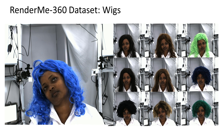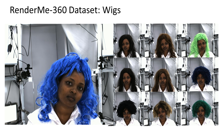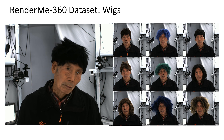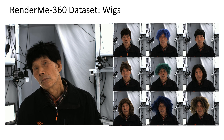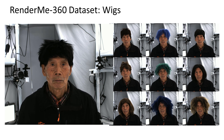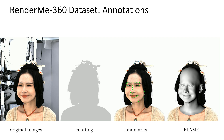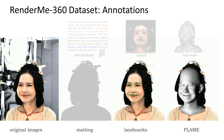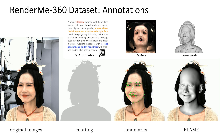To extend diversity of geometry, motion, and appearances, we collected subjects wearing wigs with continuous head movements. Except the raw captured image sequences, different kinds of annotations are applied on the captured videos, such as matting, 2D and 3D landmarks, and FLAME parameters. In addition, we also provide text attributes, high-quality texture maps, and scan meshes.